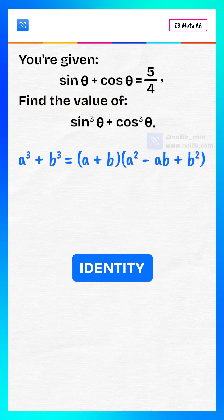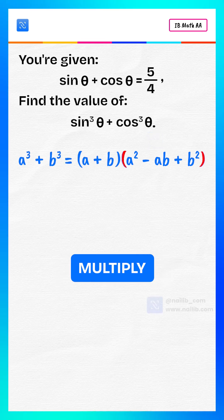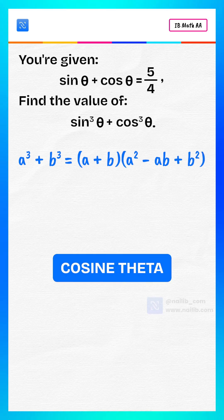We'll use this identity: a³ + b³ = (a + b)(a² - ab + b²). Here, a = sin θ and b = cos θ.